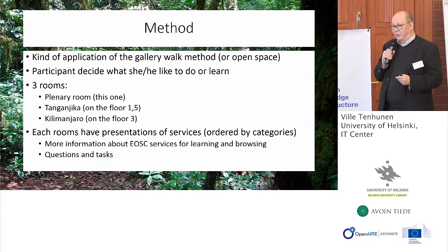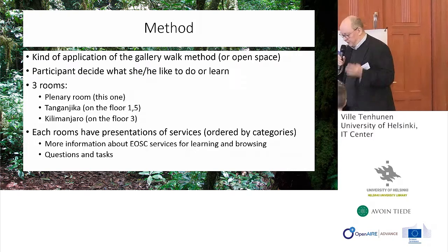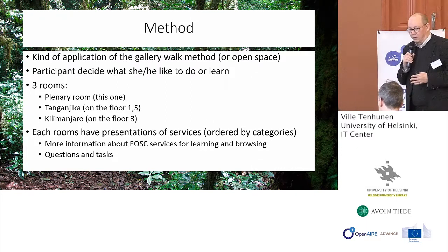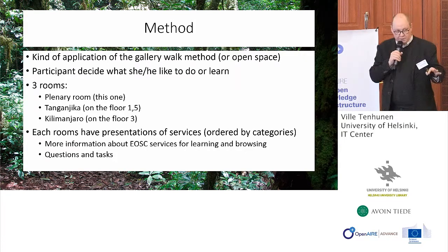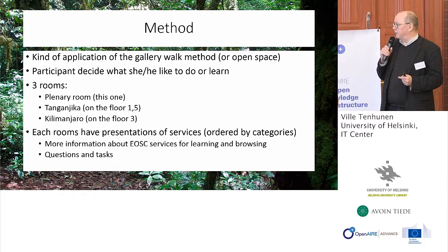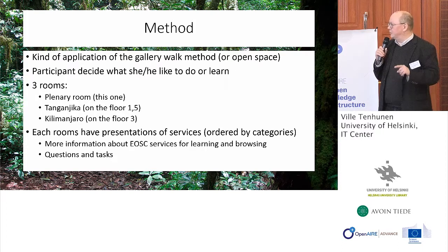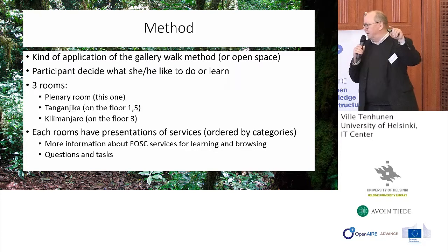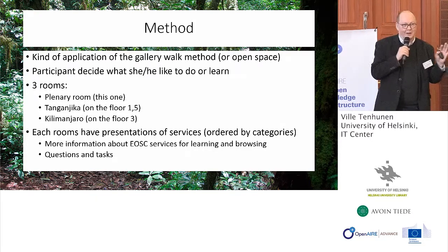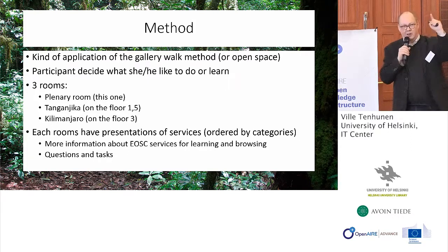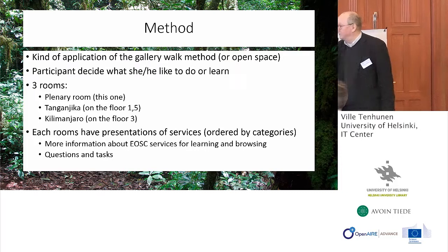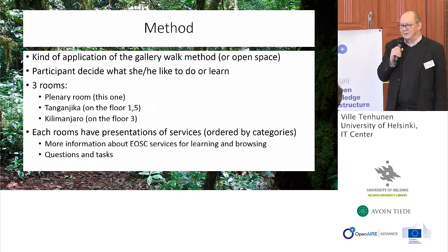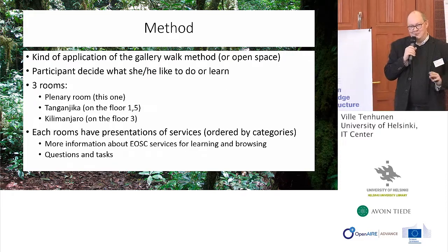We are applying that freely because we are so many, which is good. The basic idea is that each participant decides what he or she would like to see or where they would like to go. We have three rooms: this plenary room, then a room called Tanganika — Paasivuori in Finnish — which is on this same floor, and then Kilimanjaro, which means you have to climb a little bit to the third floor. These translations are quite free today.